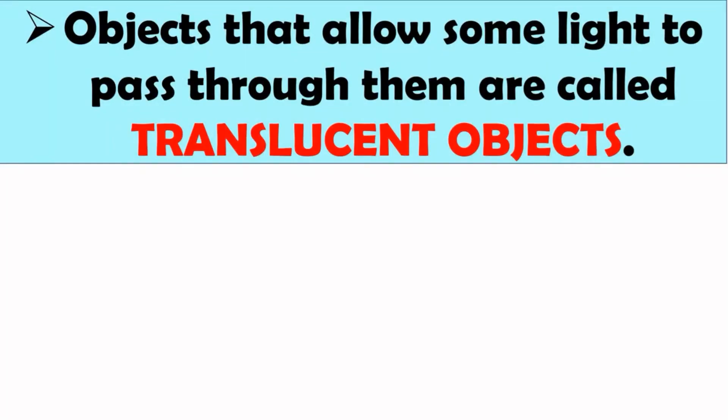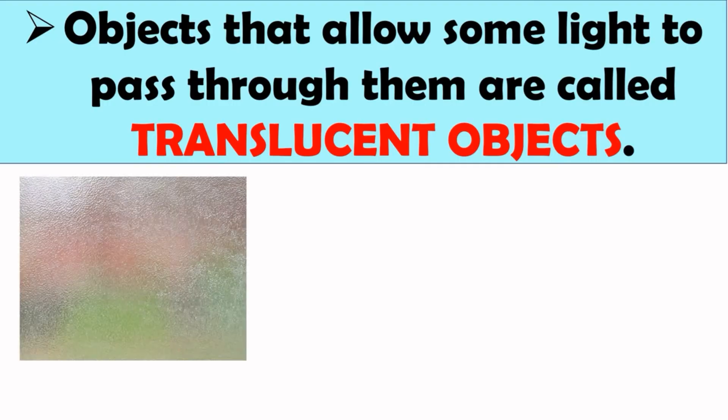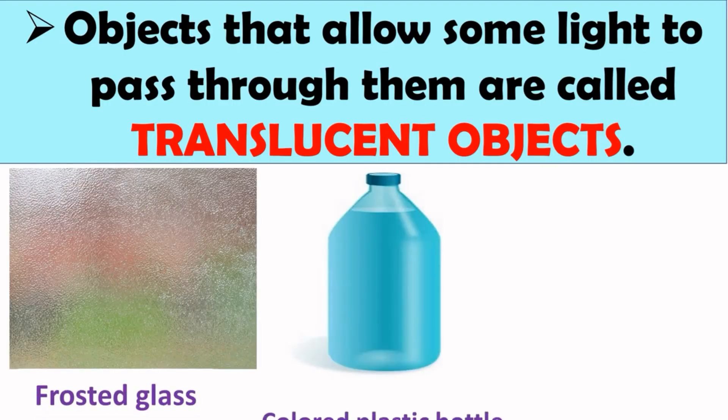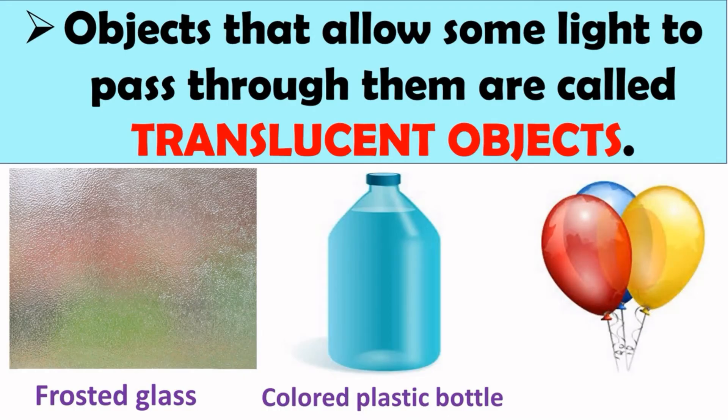Next is translucent object. Objects that allow some light to pass through them are called translucent objects. Some examples of translucent objects are frosted glass, colored plastic bottle, and colored balloons. All these objects are translucent objects.